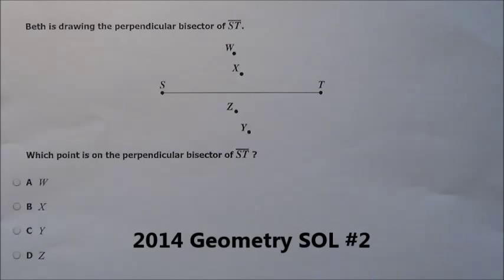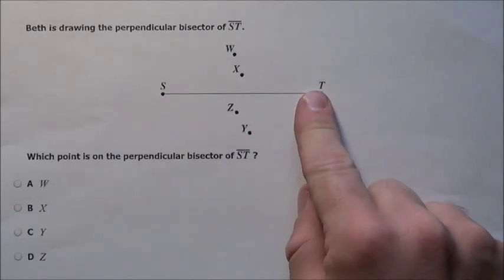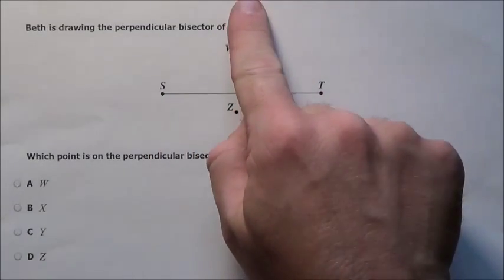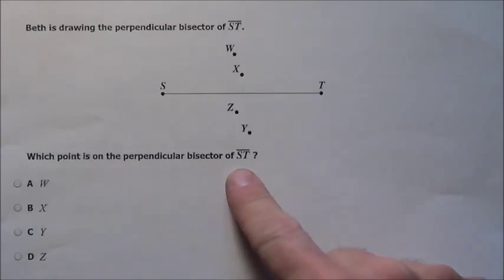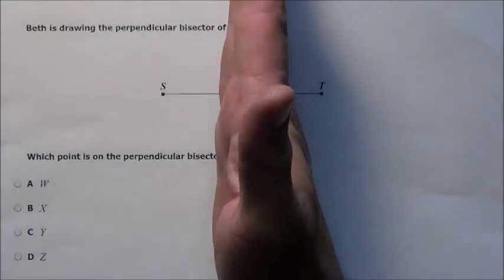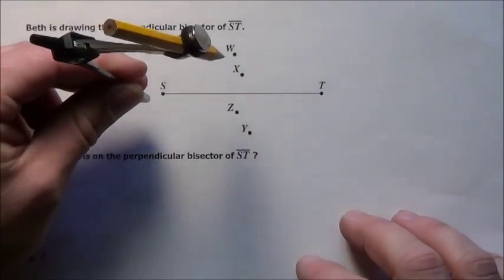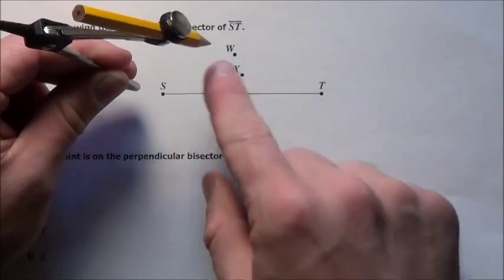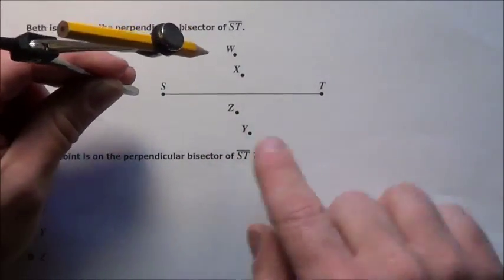Here's problem 2. It says Beth is drawing the perpendicular bisector of ST. So we have this line segment ST, and we want to have a line come down and through it — which points are on that bisector? We need to use our compass to try and draw the perpendicular bisector of this line.